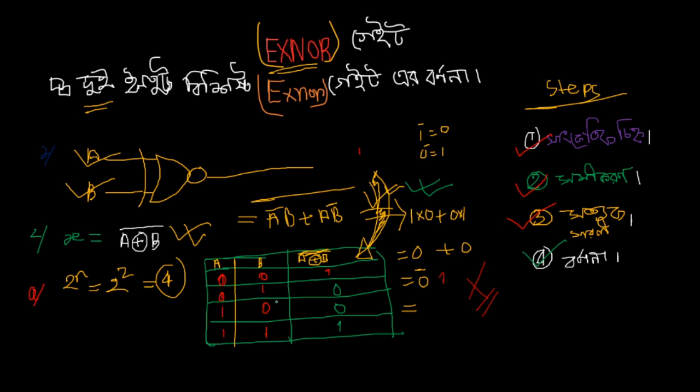Looking at the visual representation: when inputs are different, output is 0. When inputs are the same, the output becomes 1. This pattern continues through the truth table.